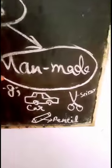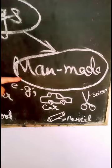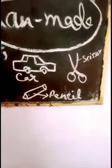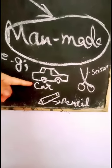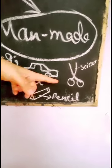Manmade things are things made by man using materials from nature. Examples are cards, scissors, and pencils.